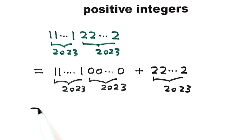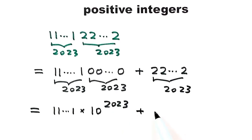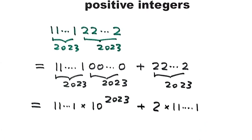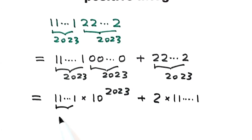Then for the first part, we can put 111 here, then times 10 to the power of 2023. Then for this one, the second number, we can put 2 times 112023 ones. Then here 2023, and here 2023.